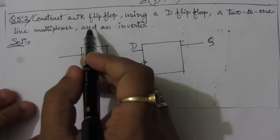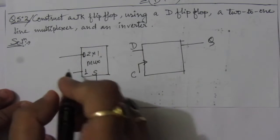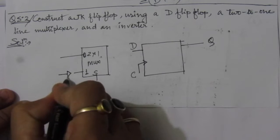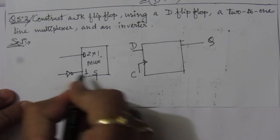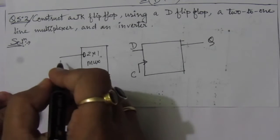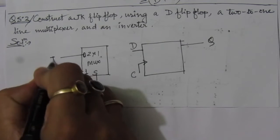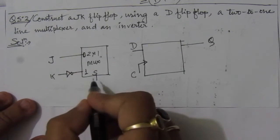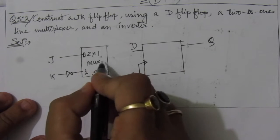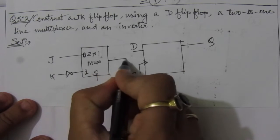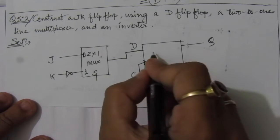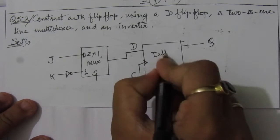We have to use an inverter so that we can build a JK flip-flop. We will place the inverter at the second input of the multiplexer. We have J and K as inputs with the select lines, and the output Y of this multiplexer will be connected to the D input of the D flip-flop.